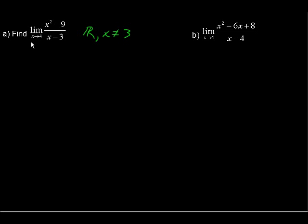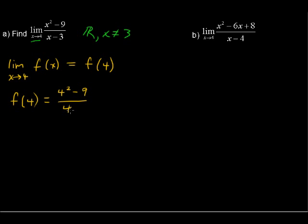But we are taking the limit as x approaches a different number, as x approaches 4. So we're going to be okay by finding the limit as x approaches 4. That's going to equal f of 4. So let's just plug in 4, and you get 4 squared minus 9 over 4 minus 3, which gives us 16 minus 9 over 1.